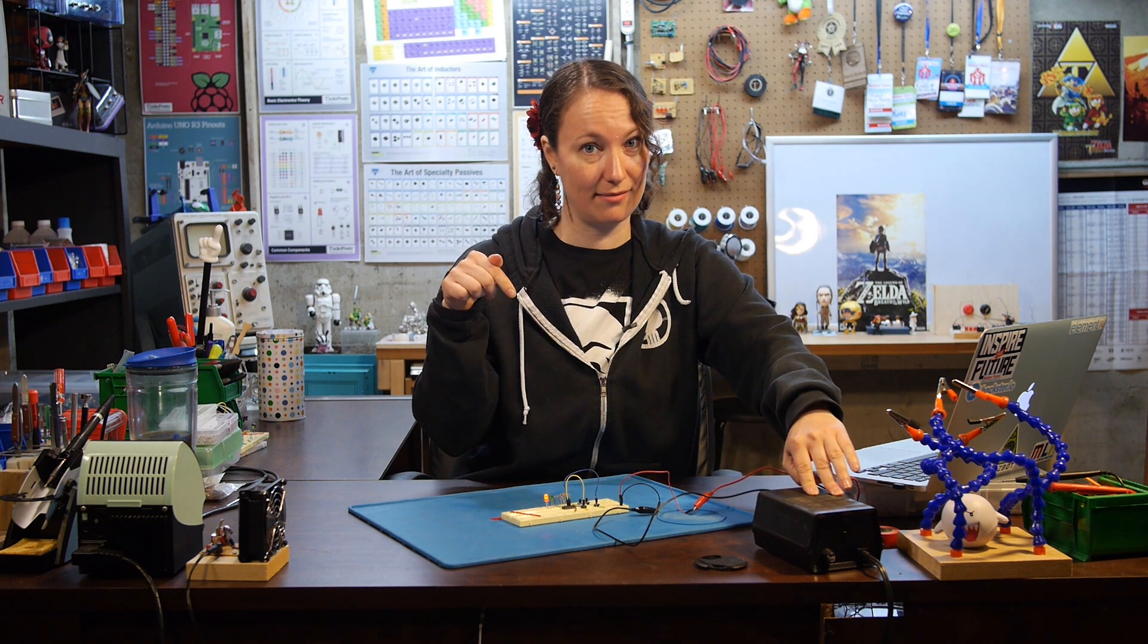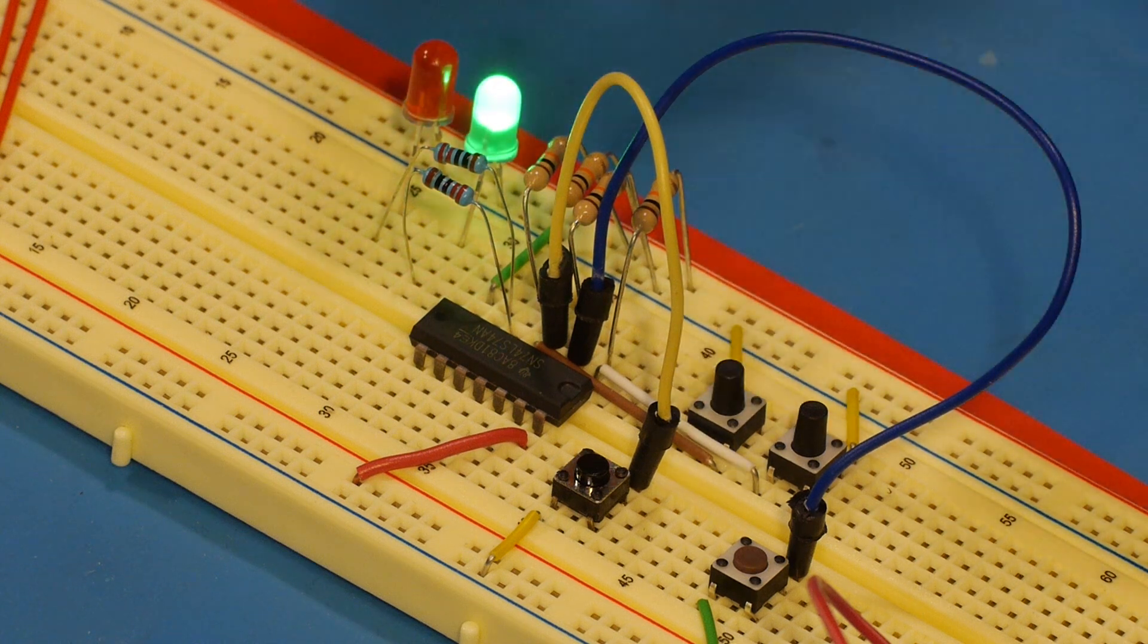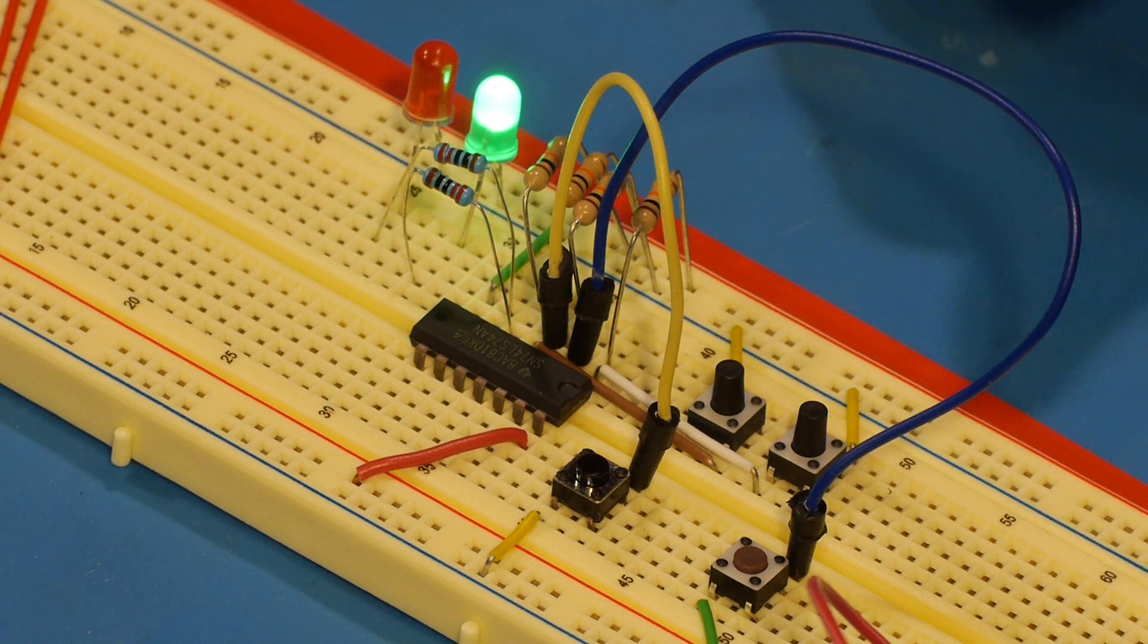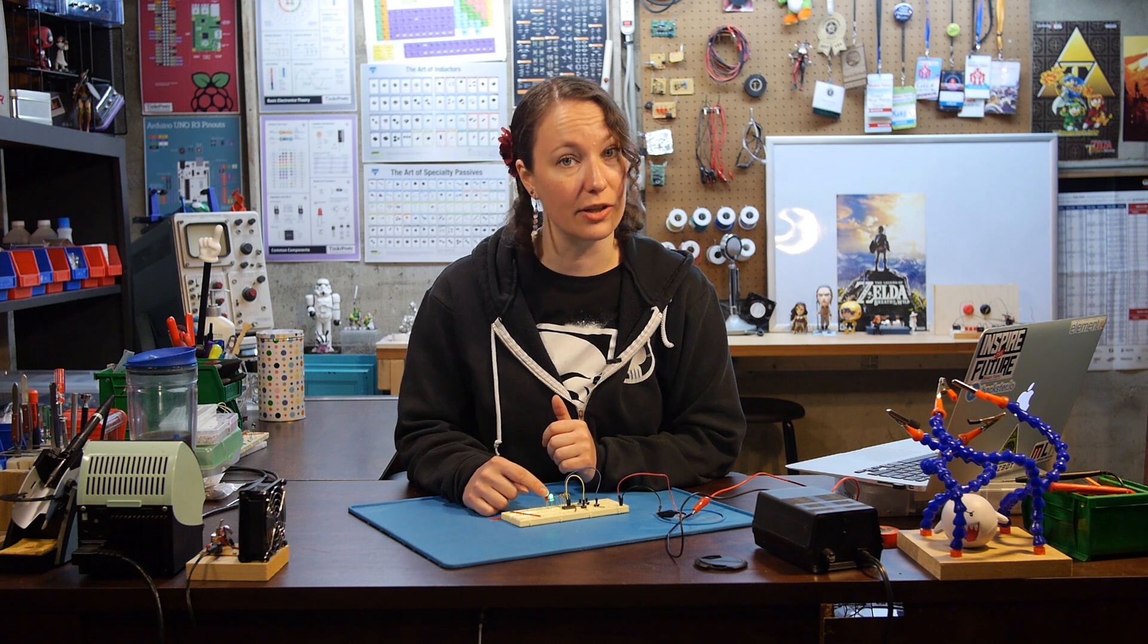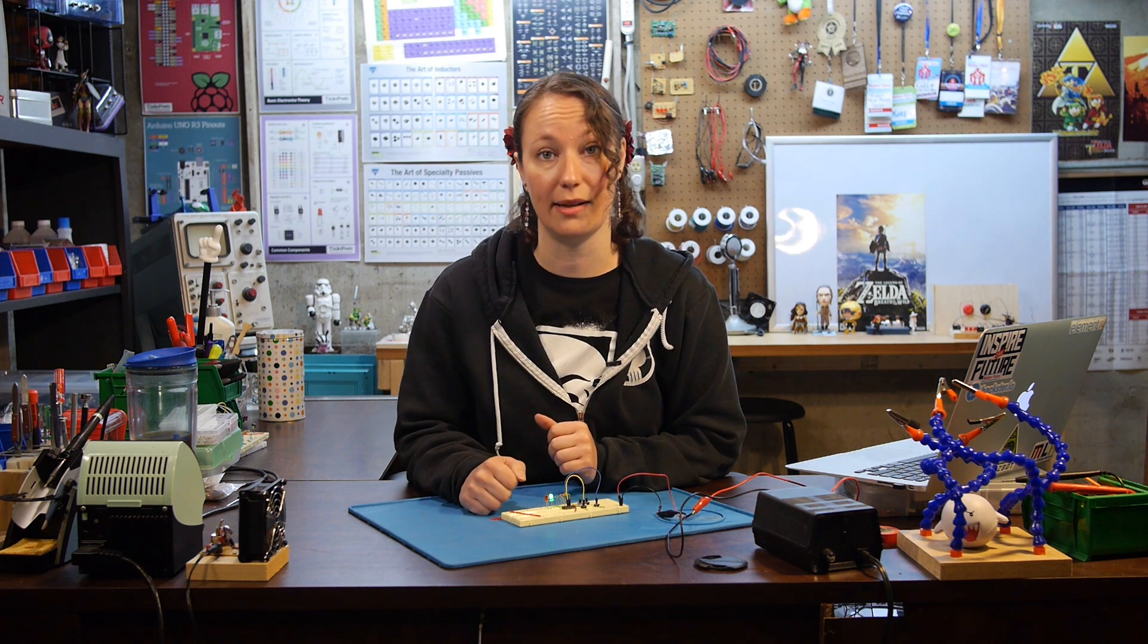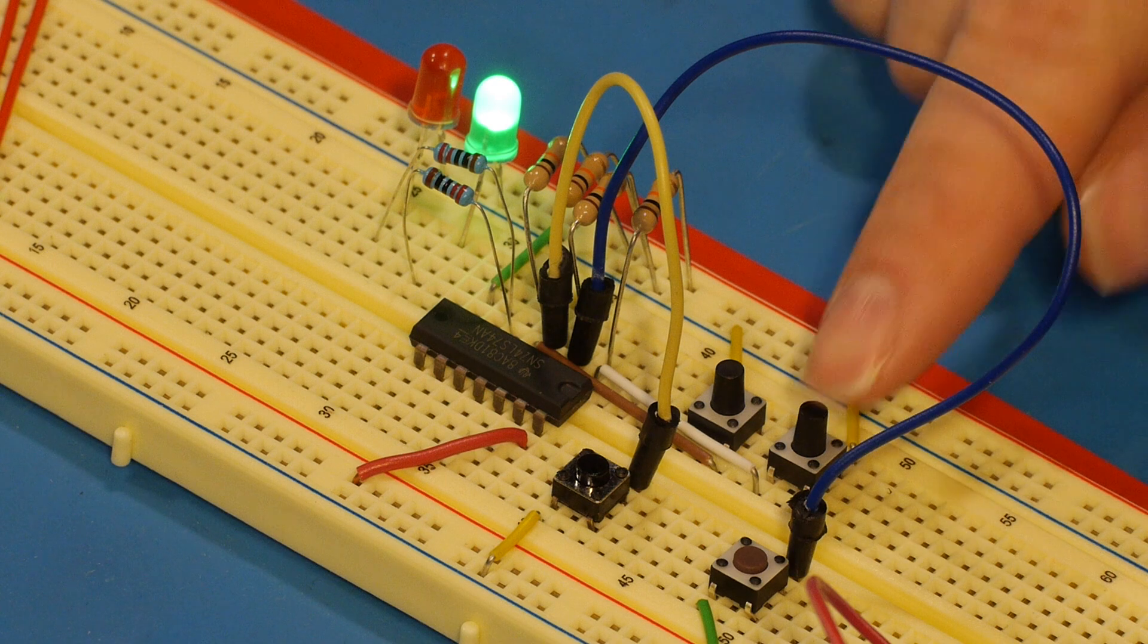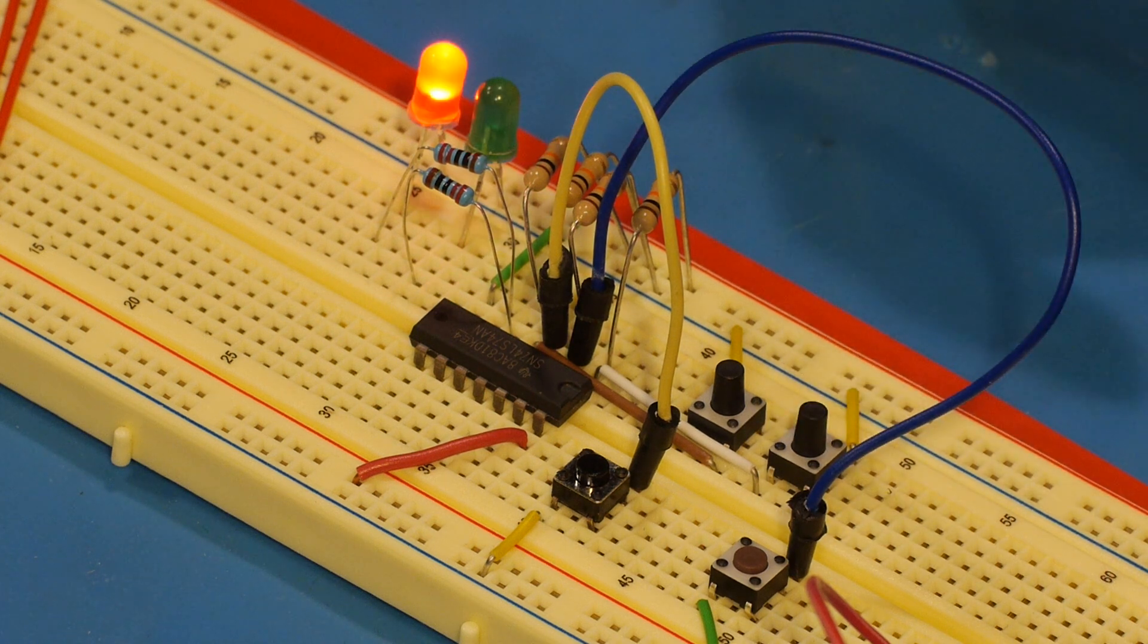Let's see how this works. If I hit preset, Q goes high, turning the green LED on. And remember that not Q is the inverse of Q, so the red LED is off. If I press clear, Q is reset to low. So the green LED is off, and then the red LED for not Q turns on.